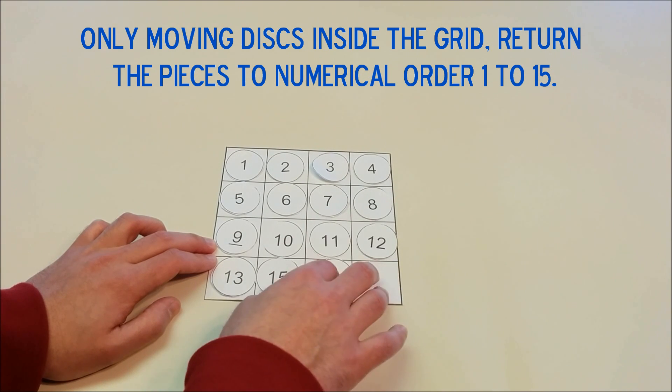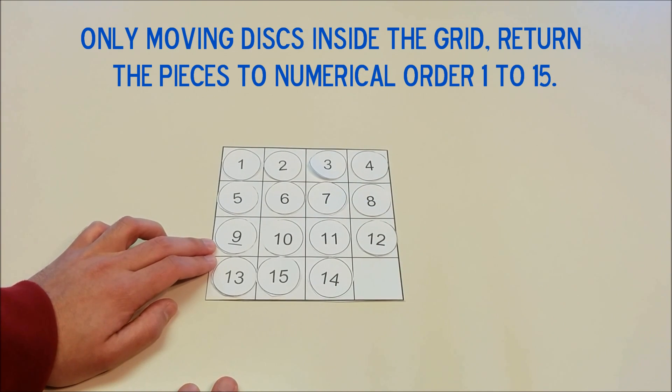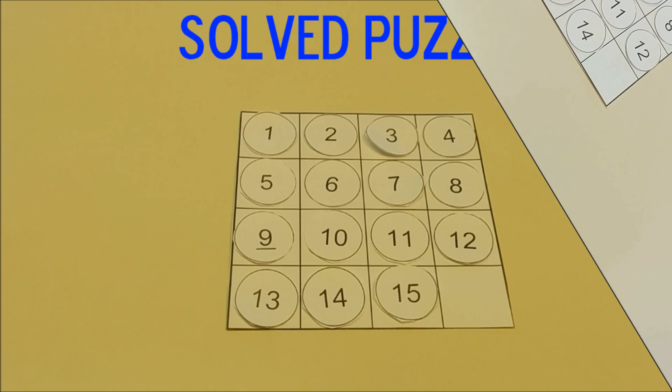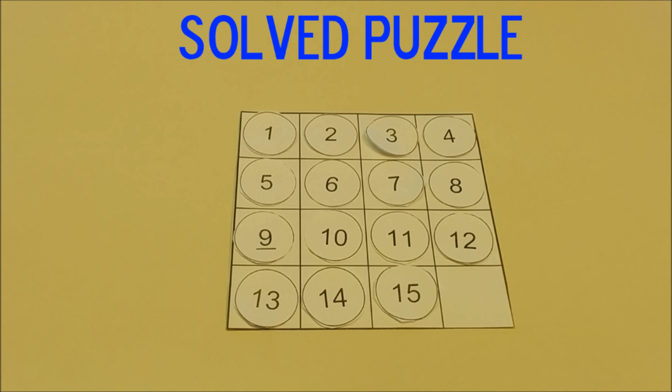To preempt people who say the puzzle cannot be solved, here's a picture of the puzzle solved as stated in the video. If you watch this video closely, there are at least three different clues. They're subtle clues. You can think about it like an episode of Sherlock.